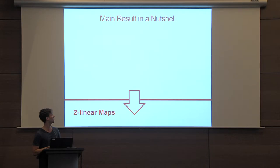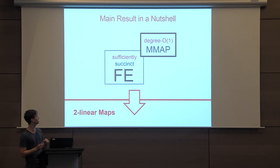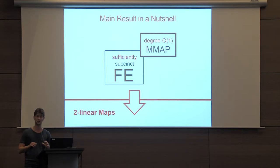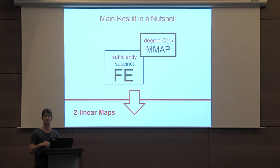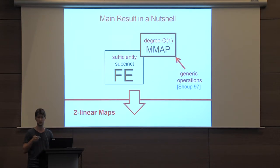Let me tell you what we are doing in this work at a high level. We identify certain sufficient conditions that allow us to really cross this line and go to bilinear maps. Roughly, we show that you can take any functional encryption scheme that uses constant-degree maps and reduce the degree to two — bilinear maps — provided two things: first, the functional encryption scheme must be sufficiently succinct, and second, the construction must use the multilinear maps in a black-box way, meaning only generic operations, completely oblivious of the actual representation of these multilinear maps. This is very similar to the generic group model.